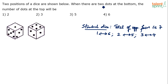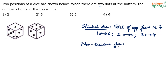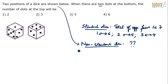If it is a standard die, it's very easy — if there are two dots at the bottom then five dots will be on top. But whatever is a non-standard dice, there is no rule; it can be in any fashion. The question says two positions of a dice are shown, so take it for granted it is a non-standard one.